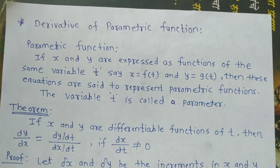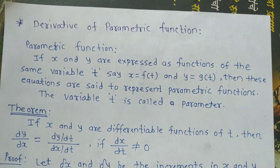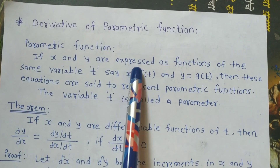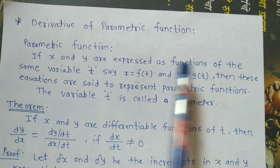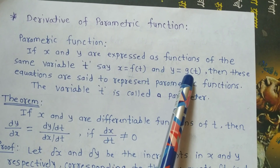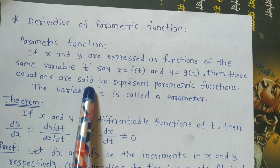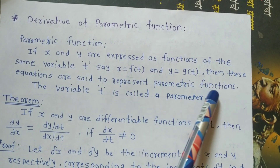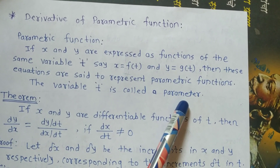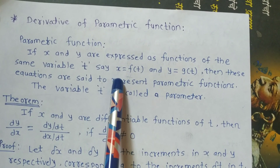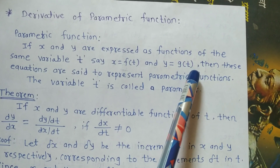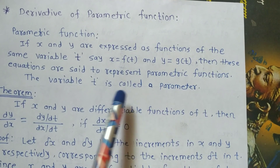Before understanding this point, let us first see the equation of parametric function. If x and y are expressed as functions of the same variable t — say x equal to f of t and y equal to g of t — then these equations are said to represent a parametric function, and variable t is called a parameter.